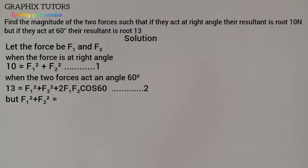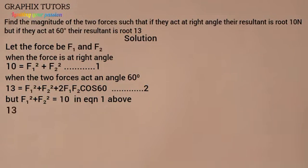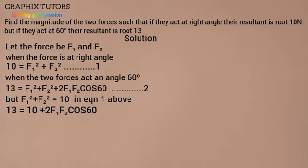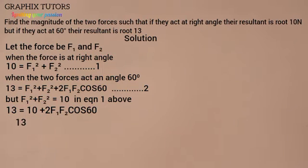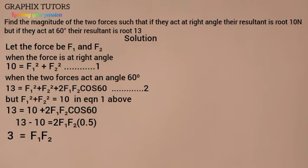From Equation 1 we know F1² + F2² = 10, so I'll substitute that into Equation 2. Wherever I see F1² + F2² I put 10, giving: 13 = 10 + 2·F1·F2·cos60. Moving 10 to the left: 13 − 10 = 2·F1·F2·cos60. Since cos60 = 0.5, we get 3 = 0.5 × 2 × F1·F2 = F1·F2. I'll tag that as Equation 3.